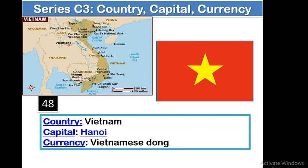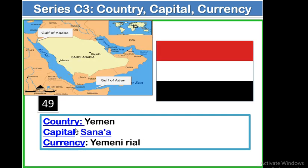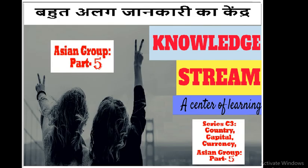The 49th country is Yemen. Capital: Sana'a. Currency: Yemeni Rial. This is the geographical location of Yemen. Its boundaries are shared by Saudi Arabia, and in the north-east side, there is Oman. In the southern side, there is the Arabian Sea. And there is the Red Sea, which includes the Gulf of Aqaba. This is the last region of the Asian group, Part 5.